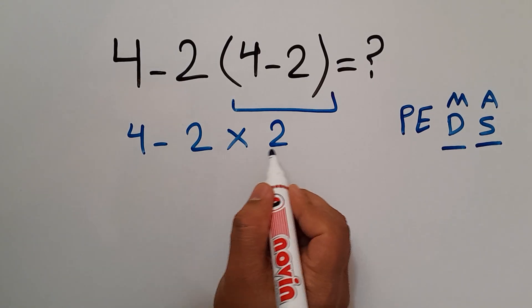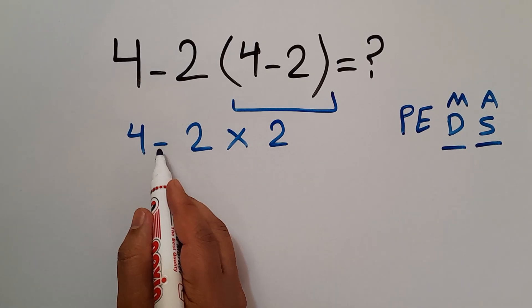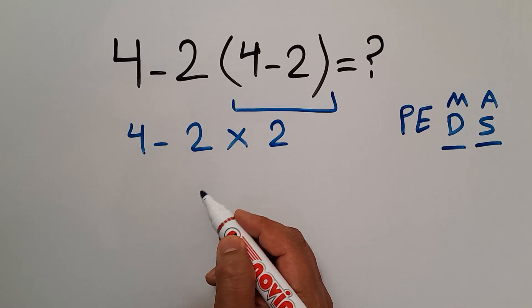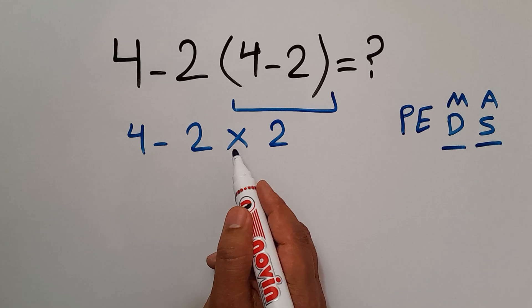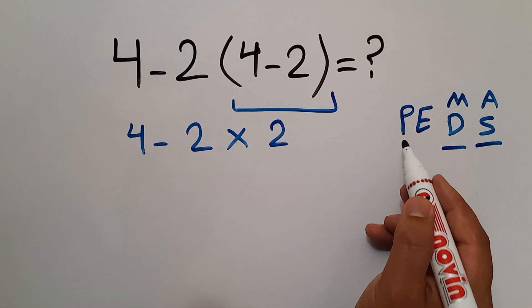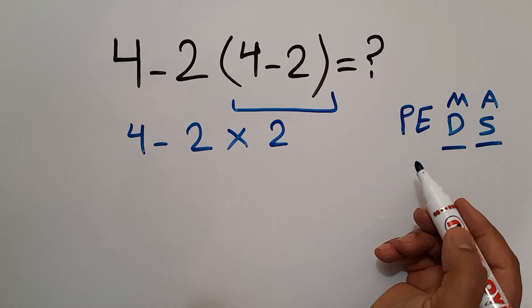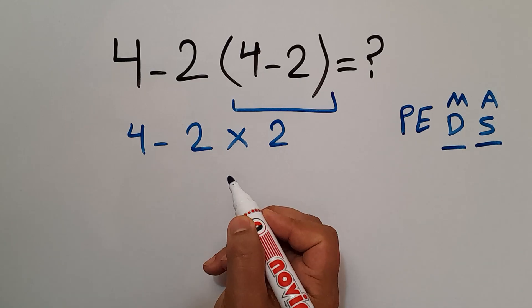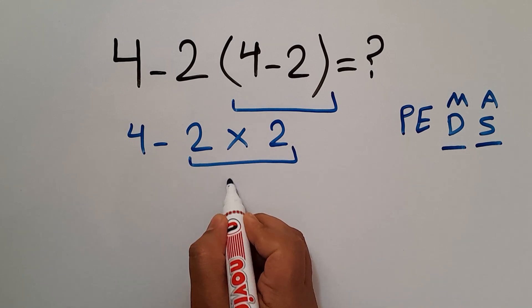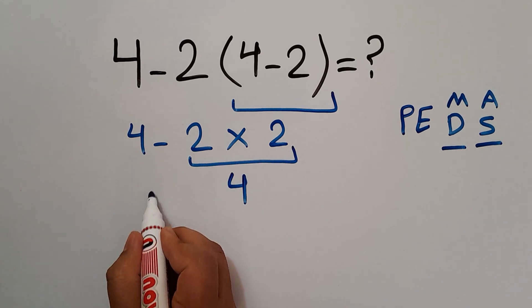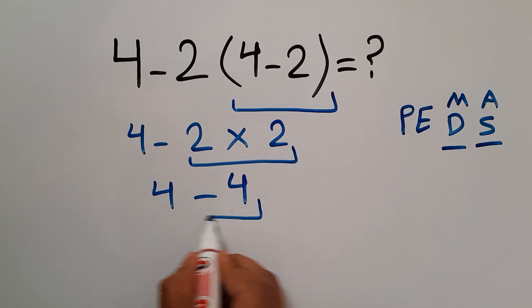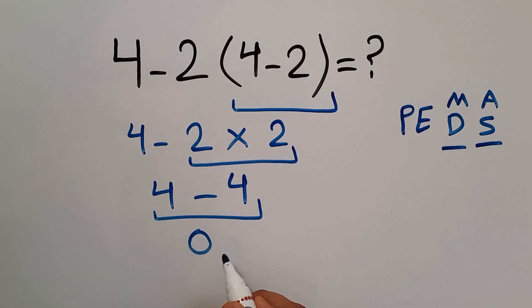So we now have 4 minus 2 times 2. We have one subtraction and one multiplication. Multiplication has higher priority than subtraction according to PEMDAS, so we do the multiplication first. 2 times 2 gives us 4, so we have 4 minus 4, and 4 minus 4 is 0. Therefore, our final answer is 0.